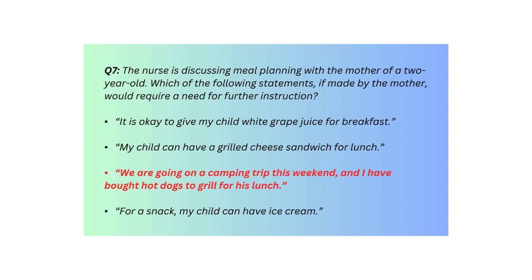Q7. The nurse is discussing meal planning with the mother of a 2-year-old. Which of the following statements, if made by the mother, would require a need for further instruction? 'It is okay to give my child white grape juice for breakfast.' 'My child can have a grilled cheese sandwich for lunch.' 'We are going on a camping trip this weekend, and I have bought hot dogs to grill for his lunch.'